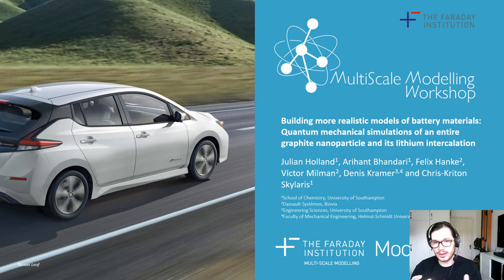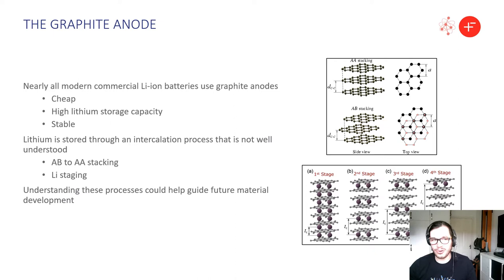In order to do this we're going to be looking at quantum mechanical simulations of entire graphite nanoparticles and looking at ways that we can intercalate. So first of all a little bit of background. As I'm sure we all know the graphite anode is ubiquitous in most lithium ion batteries. This is because it's cheap, it's got a high lithium storage capacity and is stable against electrolytes and lithium itself.